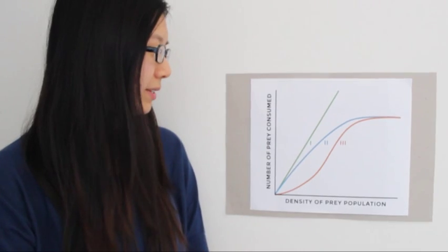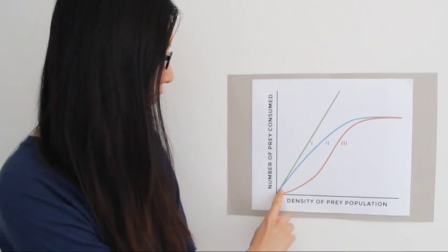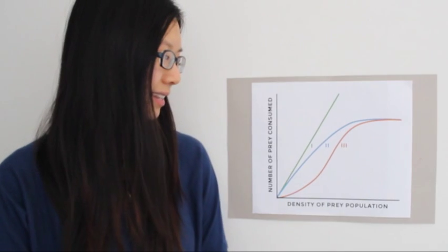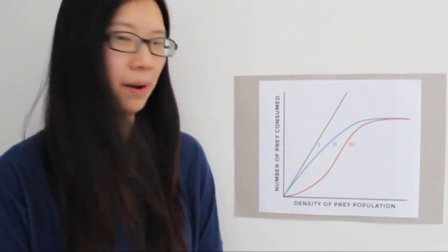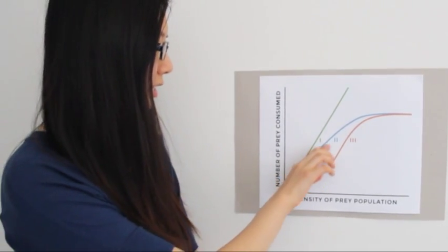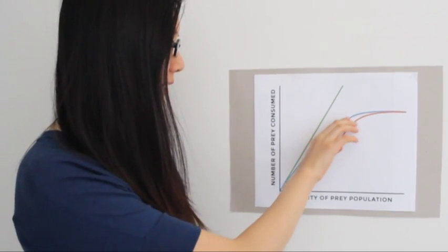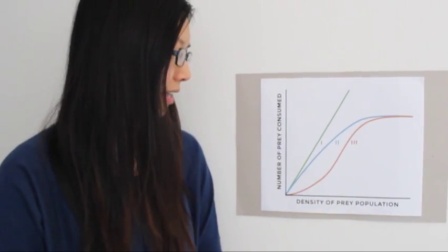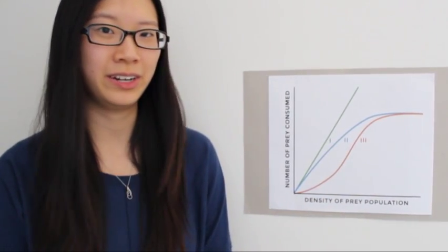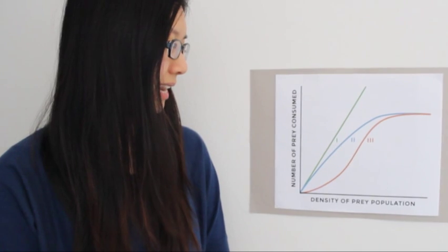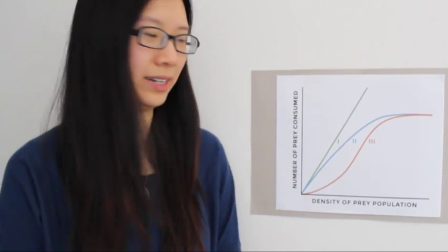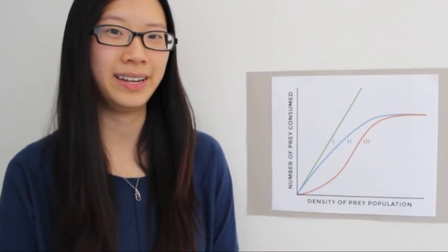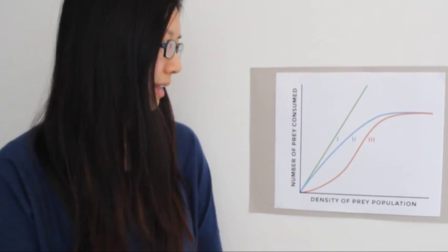A type 2 functional response curve is shown here on this graph in blue. As the density of the prey population increases, you start to see the curve plateau. This plateau is thought to be due to the time it takes a predator to eat and process its prey interfering with its ability to search for more prey.